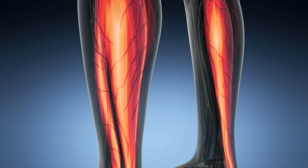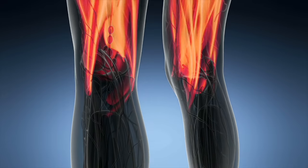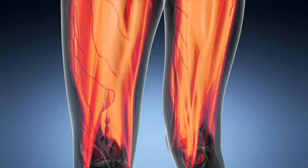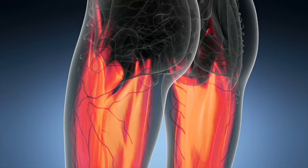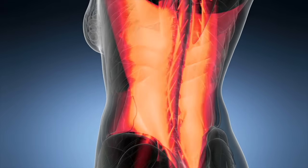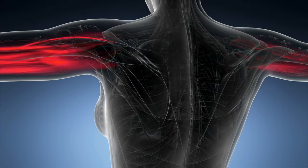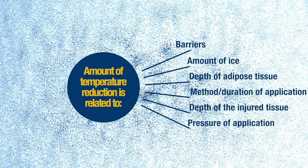An important practical consideration is whether you are actually cooling the structures you are aiming for. These effects are generally seen close to the surface and can be affected by many factors. If you are trying to reduce pain and swelling in a muscle not close to the surface of the skin, or if there is a large amount of adipose tissue in the way, the effects may be reduced. The magnitude of temperature reduction is affected by six things: the placement of a barrier between the ice and the skin, the amount of ice in the pack, the depth of adipose tissue, the method and duration of application, the depth of the injured tissue, and the pressure with which the ice is applied.